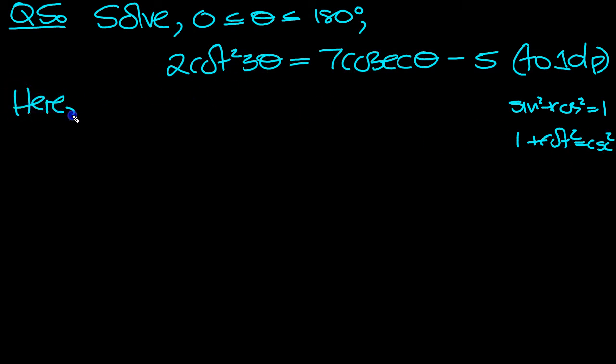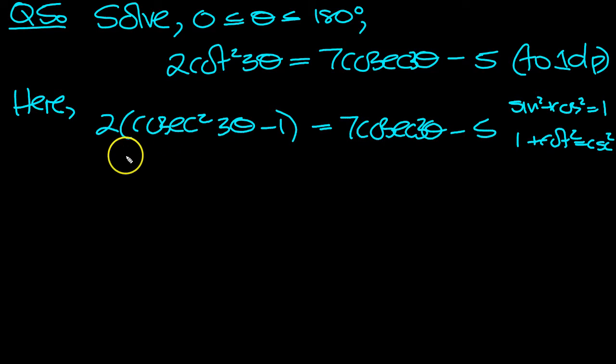So let's do that. 2 lots of cot squared, which is cosec squared minus 1, 3 theta of course, equals 7 cosec 3 theta minus 5. Let's expand the bracket: 2 cosec squared 3 theta, then bring the 7 minus to minus 7 cosec 3 theta. We've got minus 2 when we expand the bracket here, bring the minus 5 over plus 5, minus 2 is plus 3, and there's nothing left on the other side.